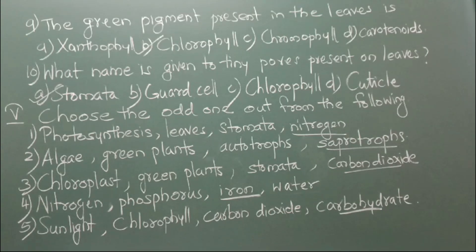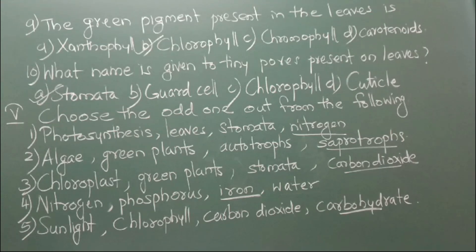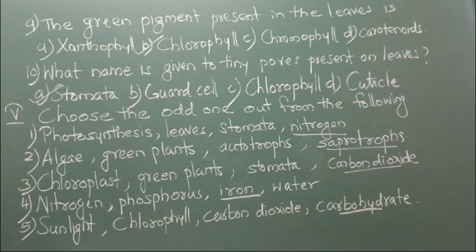Number 3: Chloroplast, green plants, stomata, carbon dioxide. The odd one is carbon dioxide. Number 4: Nitrogen, phosphorus, iron, water. The odd one is iron. Number 5: Sunlight, chlorophyll, carbon dioxide, carbohydrate. The odd one is carbohydrate.